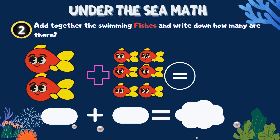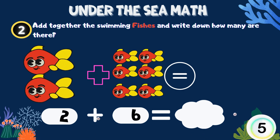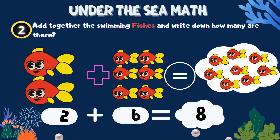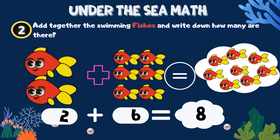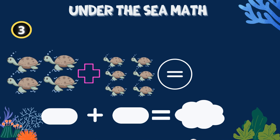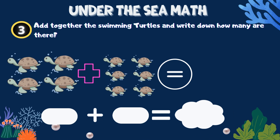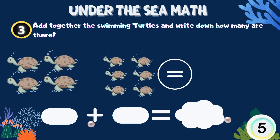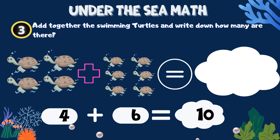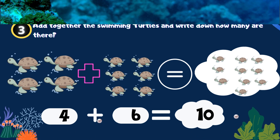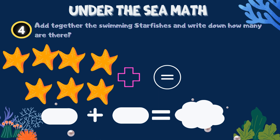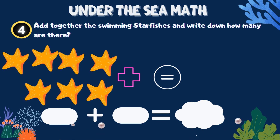Add together the swimming fishes and write down how many there are. Add together the swimming turtles and write down how many there are. Add together the swimming starfishes and write down how many there are.